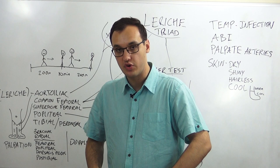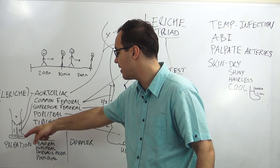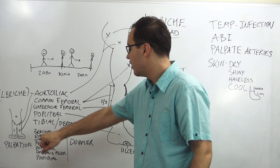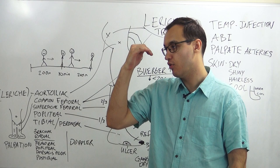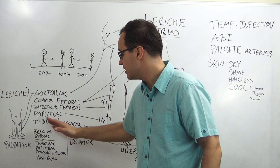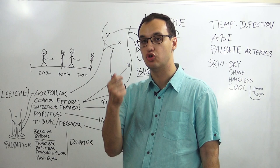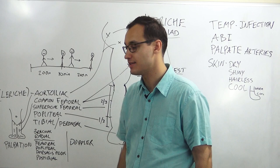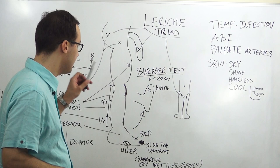If you feel the femoral pulse, move down to the popliteal artery behind the knee. If that's felt too, proceed to the posterior tibial behind the ankle, then the dorsalis pedis on the forefoot. If you cannot feel any of these by hand, use a Doppler device — it can detect arterial flow sounds much more easily than palpation.